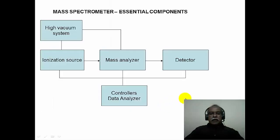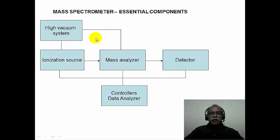A mass spectrometer essentially consists of five components. First, a high vacuum system, because mass spectrometry deals with ions generated in the gas phase. In order to generate molecular ions in the gas phase, high vacuum is essential — we are talking about vacuum of the order of 10⁻⁶ to 10⁻⁹ torr.